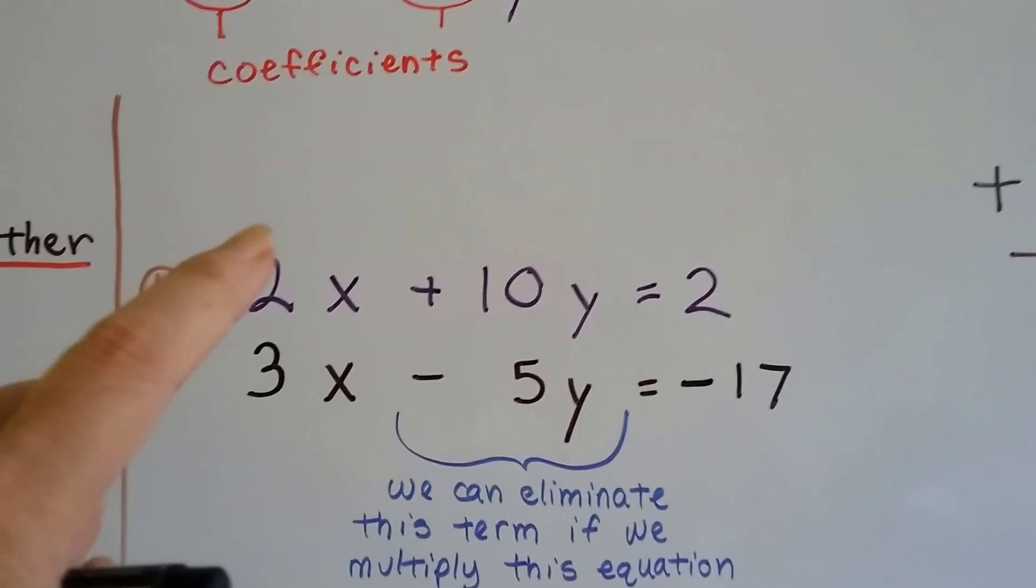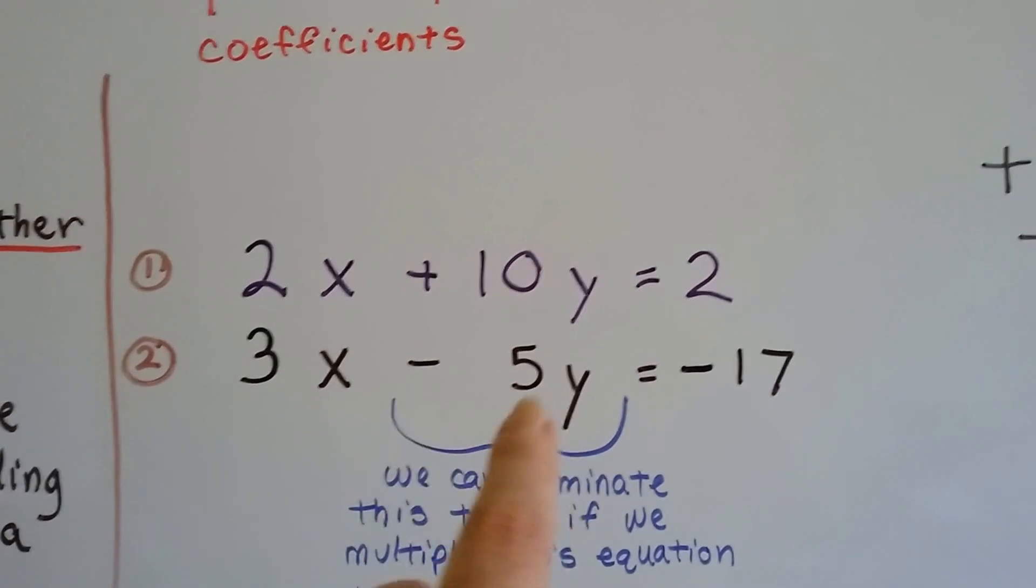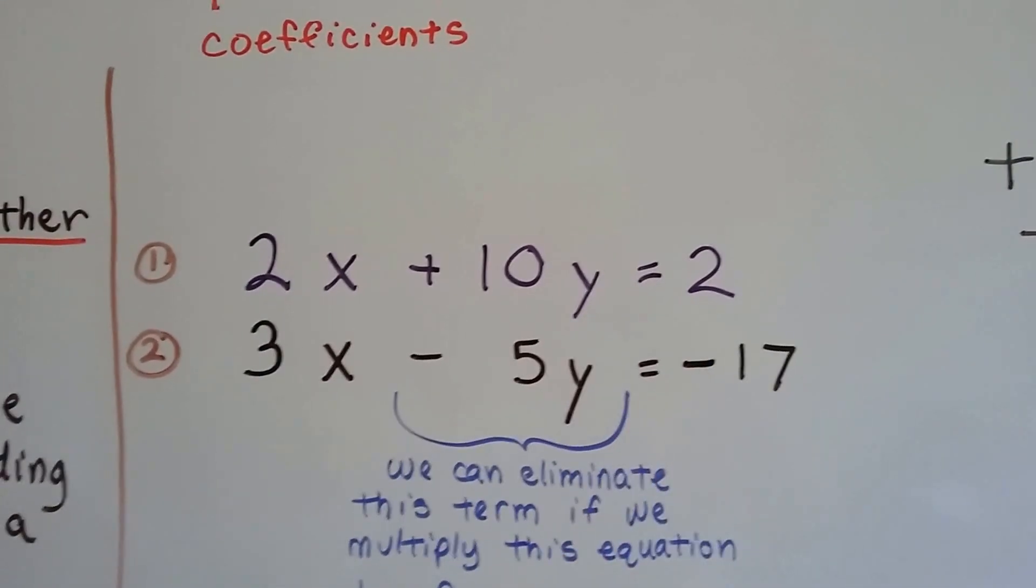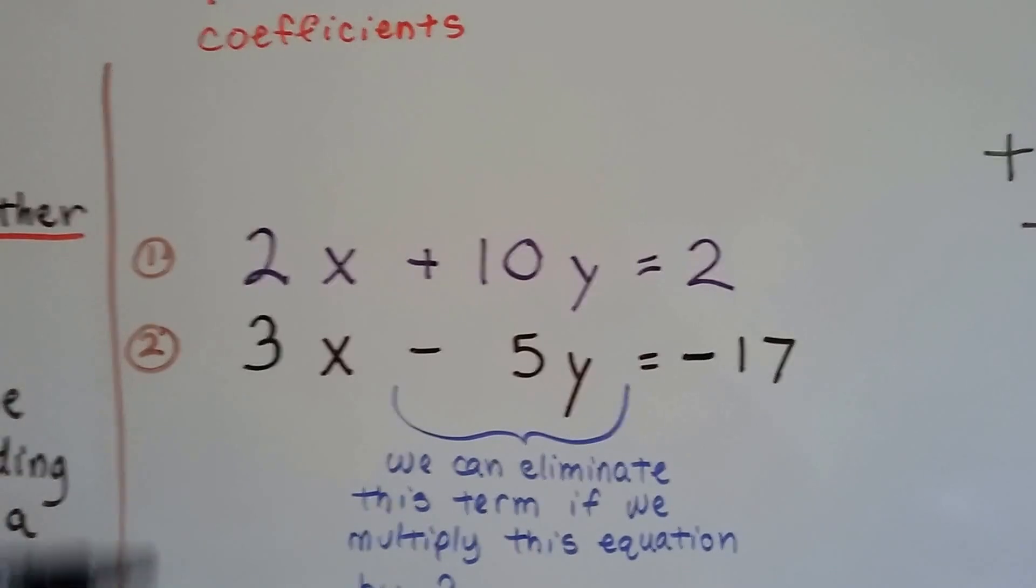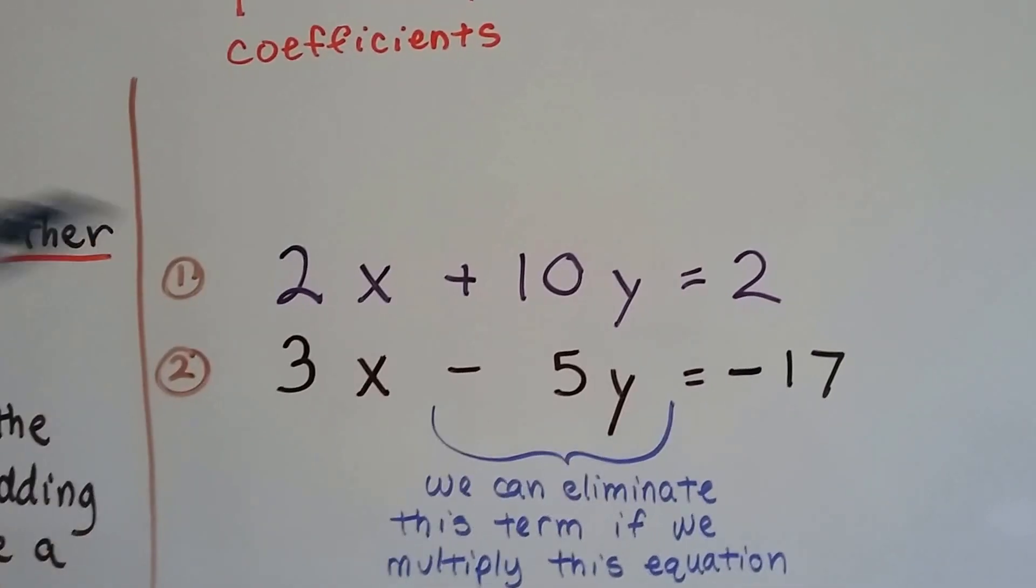So we've got 2x plus 10y equals 2 and 3x minus 5y equals negative 17. Now we need to get one of these variables eliminated.